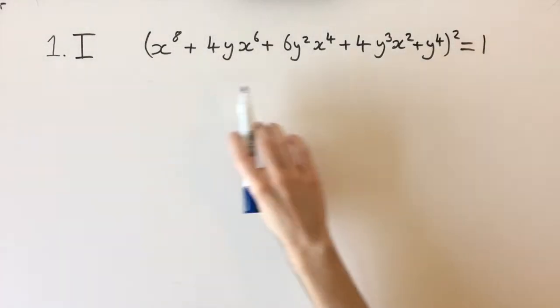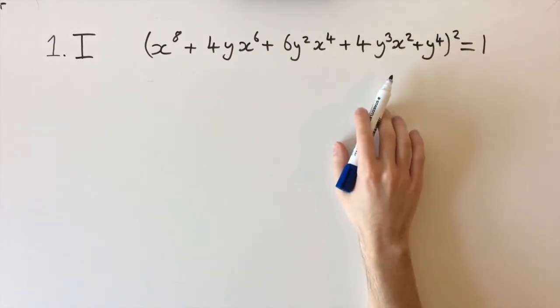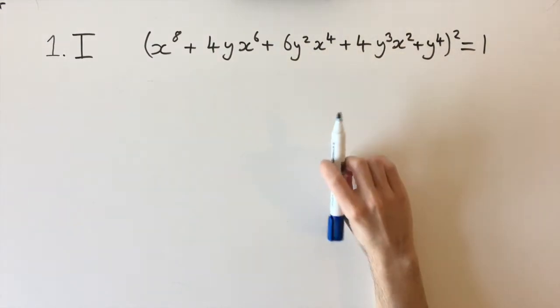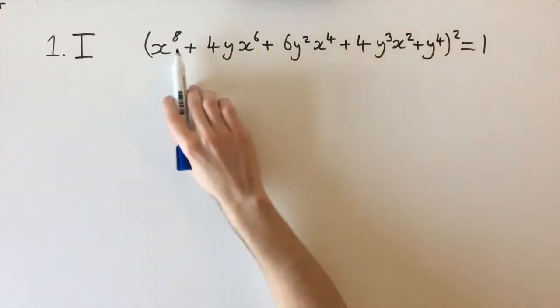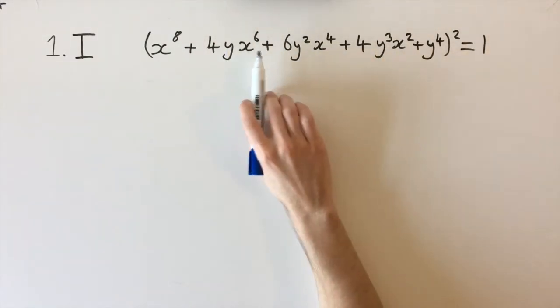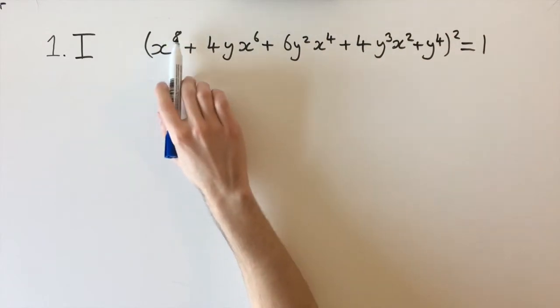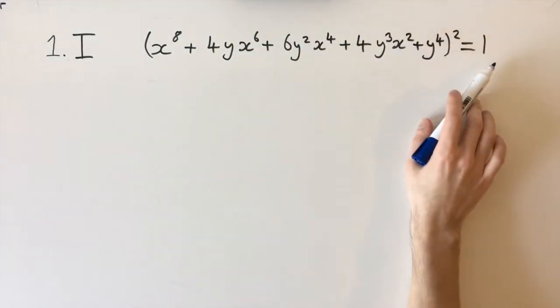This is one of those really horrible looking algebra questions that is actually quite easy to solve once you make a key observation. What we want to be looking at is look for patterns in the powers of these variables. If we just look at x, we have powers of 8, 6, 4, 2, and then 0.